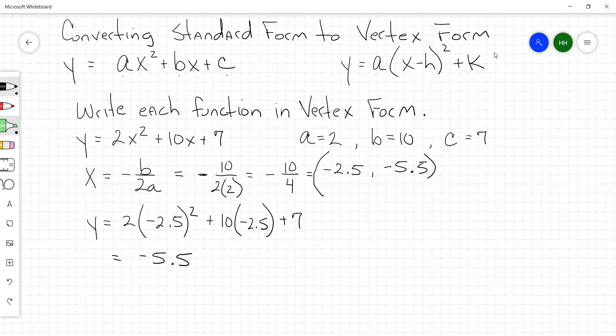So your y value at the vertex is negative 5.5. So now you've got your a, and you've got the coordinates at the vertex. So in vertex form, y is equal to a, which is 2, times x. Now it's x, and then the opposite of your x goes in there. So this goes positive 2.5, squared, and then your y value at the vertex exactly as it is. So this is minus 5.5. There's your equation in vertex form.